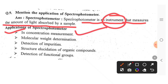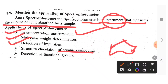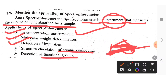After that, we measure the color from the sample. To color the sample, we measure the amount of light into the sample. It is also used for molecular weight determination, detection of organic compound structures, and the detection of functional groups.